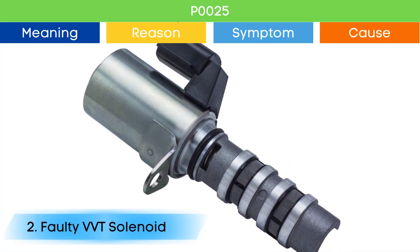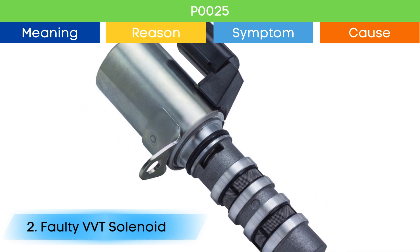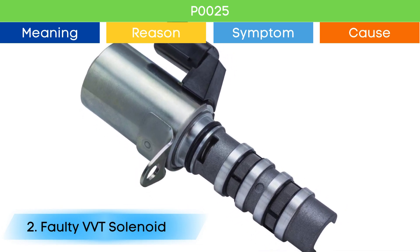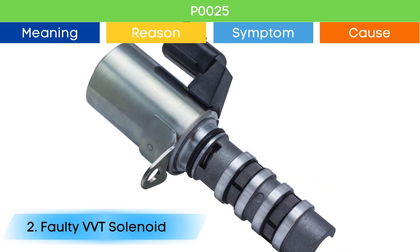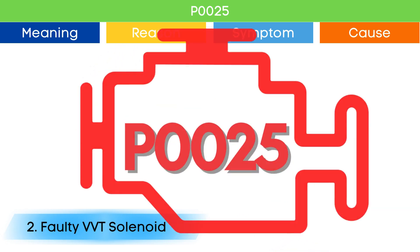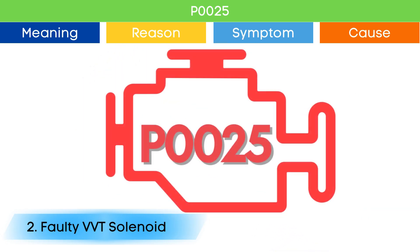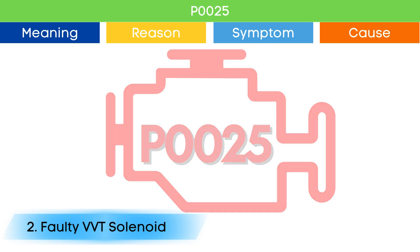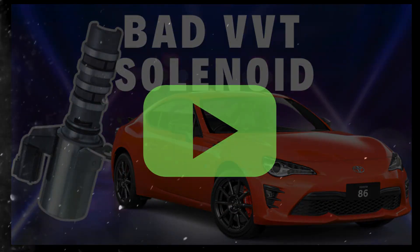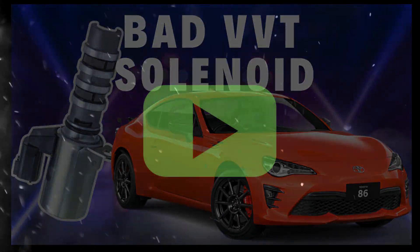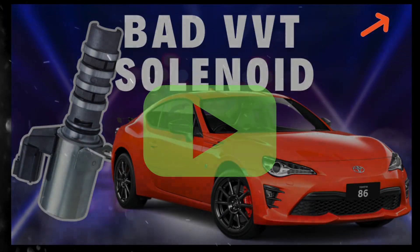Cause number two: bad VVT solenoid. Due to a bad VVT solenoid, the camshaft position advance and delay may not work properly, which may trigger P0025 and other OBD2 codes related to the VVT solenoid, along with symptoms of a bad VVT solenoid. Check our detailed video to learn more — link in the corner.